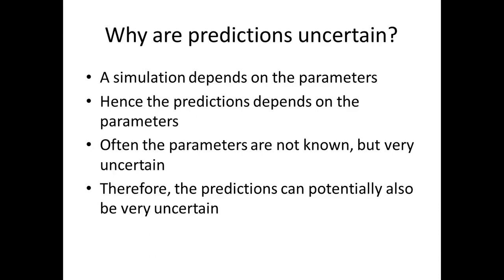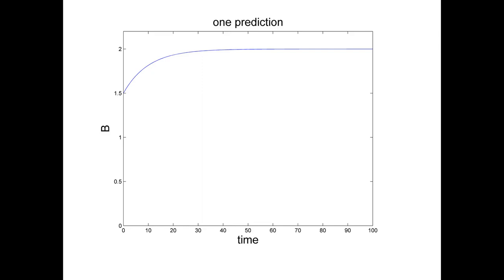If you look at the concentration of B as a function of time for one parameter set, you get one simulation of B. We simply do not know if we can say this is how the model predicts B to behave, because for some other parameter set, something completely different might happen. If we take a hypothetical scenario and look not at just one simulation but at all others, this blue curve is the simulation for one set of parameter values.